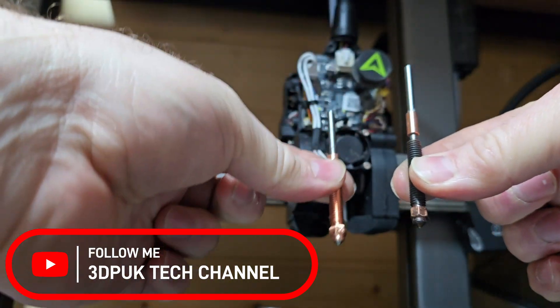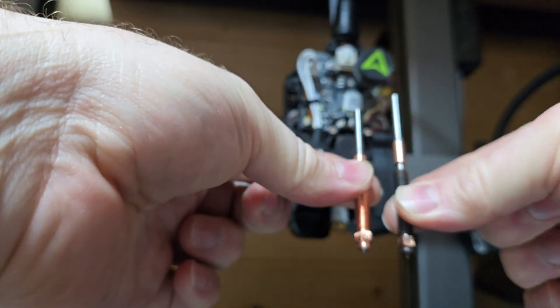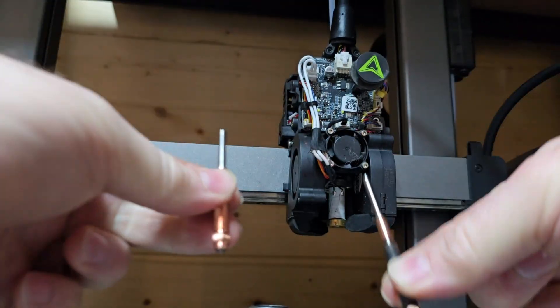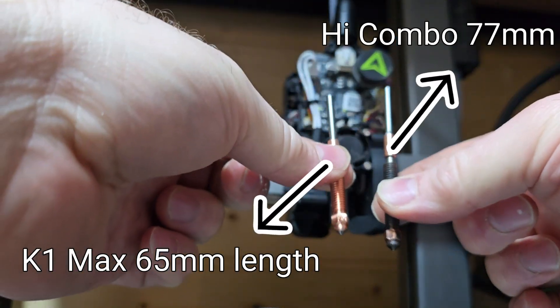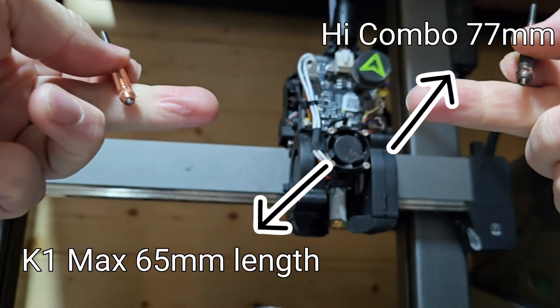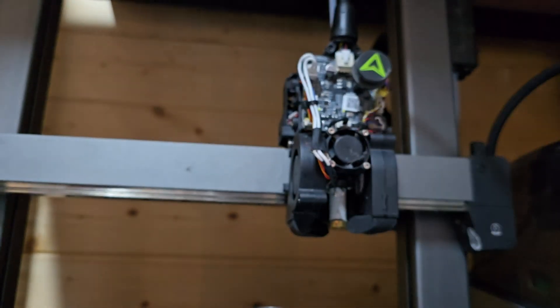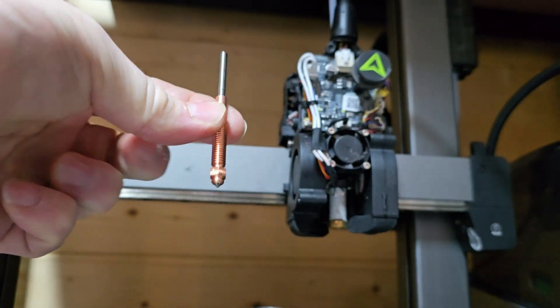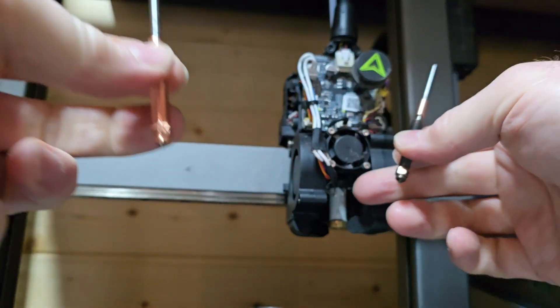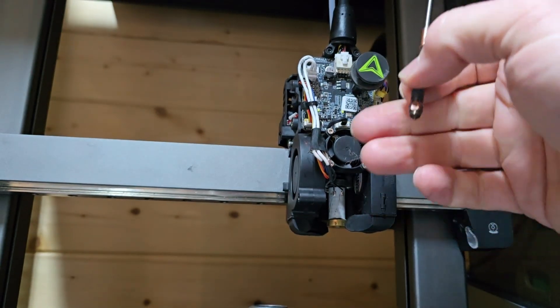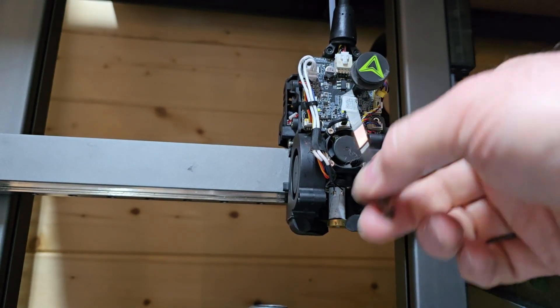This is the nozzle you get. This is the K1 Max nozzle. Considerable difference. I've left the sizes on the screen now. So this one is the High Combo nozzle, this one is the K1 Max nozzle. I was hoping to be able to use these on here because I've got 0.2, 0.4, and 0.6 so I wanted to swap them about and see, do some tests, but it hasn't worked out.